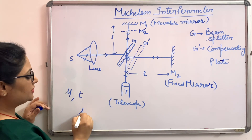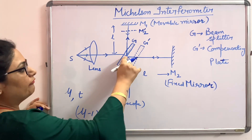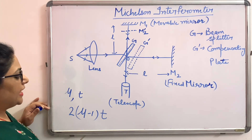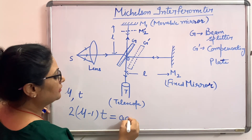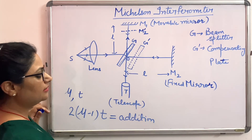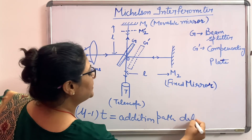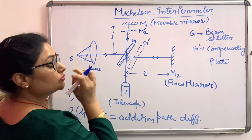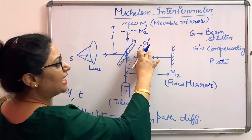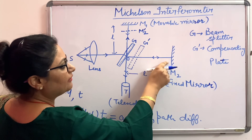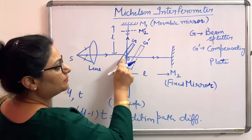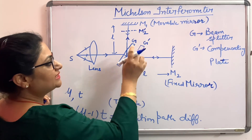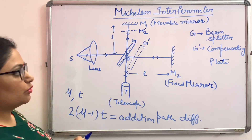The reflected ray has an additional path difference of (mu − 1) × T while going towards mirror M1, and again travels through the glass plate on the way back, giving a total additional path difference of 2(mu − 1) × T. To compensate this, a compensating plate G dash is placed in the path of the beam going towards mirror M2, so it also travels through glass twice, adding the same extra path difference 2(mu − 1) × T. This G dash compensates the extra path of the ray going towards M1.